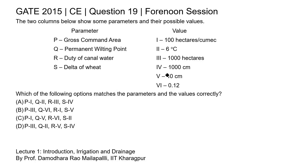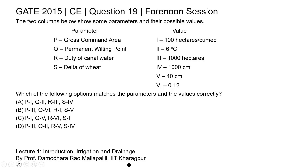The question asks which of the following options correctly matches the parameters and the values. In column one, parameters are given, and in column two, the values are given. We need to find the correct match between the two columns. This question is from the topic of soil-water relationship.